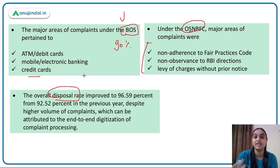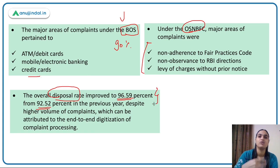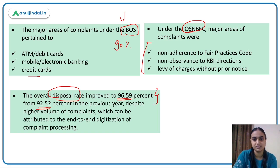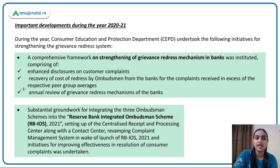The disposal rate — the rate at which grievances are being addressed — has improved to 96.59%, up from around 92% in the previous year. This improvement is attributed to digitization: the complaint management system has become digital, making it easier to redress complaints.